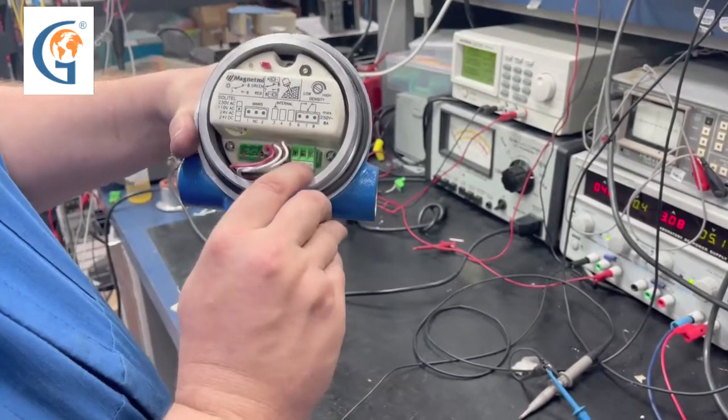So, this is the relay that is either normally open or normally closed, and will change depending on the state of whether or not the rod is within a solid material or not.